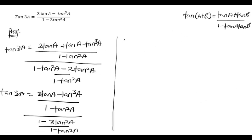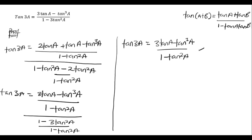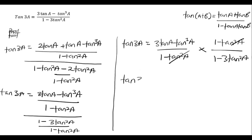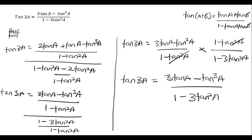So from here, tan 3a equals 3 tan a minus tan cube a, all divided by 1 minus tan squared a, multiplied by — we reciprocate the denominator — 1 minus tan squared a over 1 minus tan squared a. We cancel the 1 minus tan squared a terms, and we get tan 3a equal to 3 tan a minus tan cube a, all divided by 1 minus 3 tan squared a, as required.